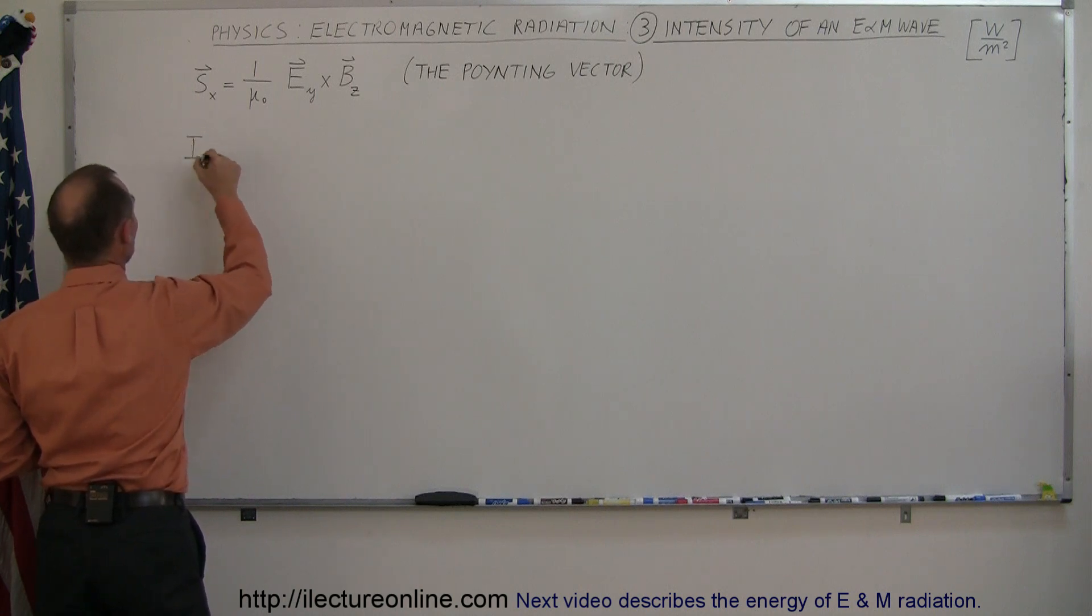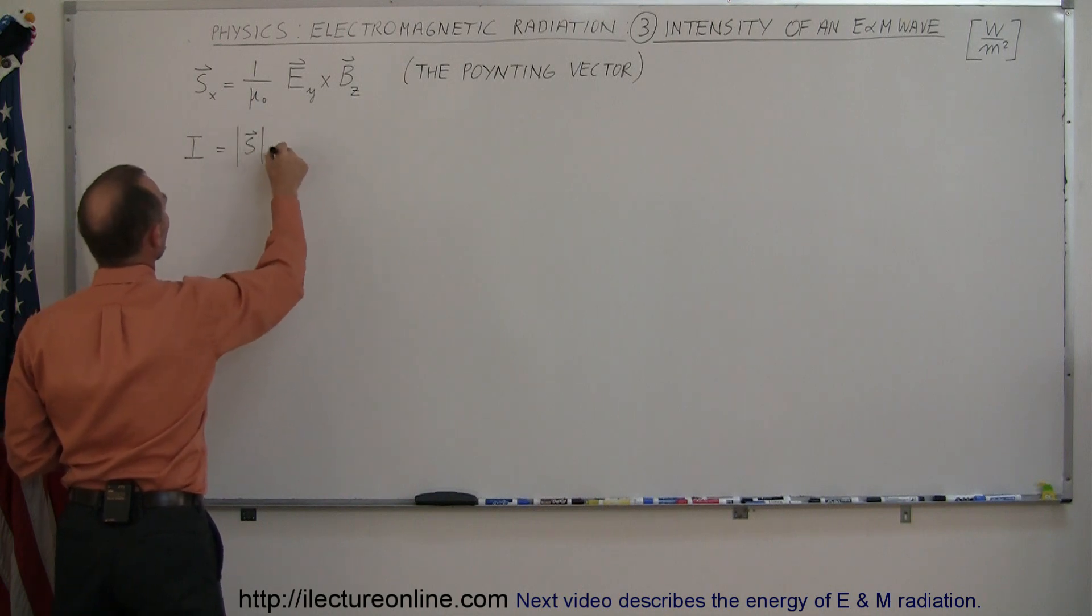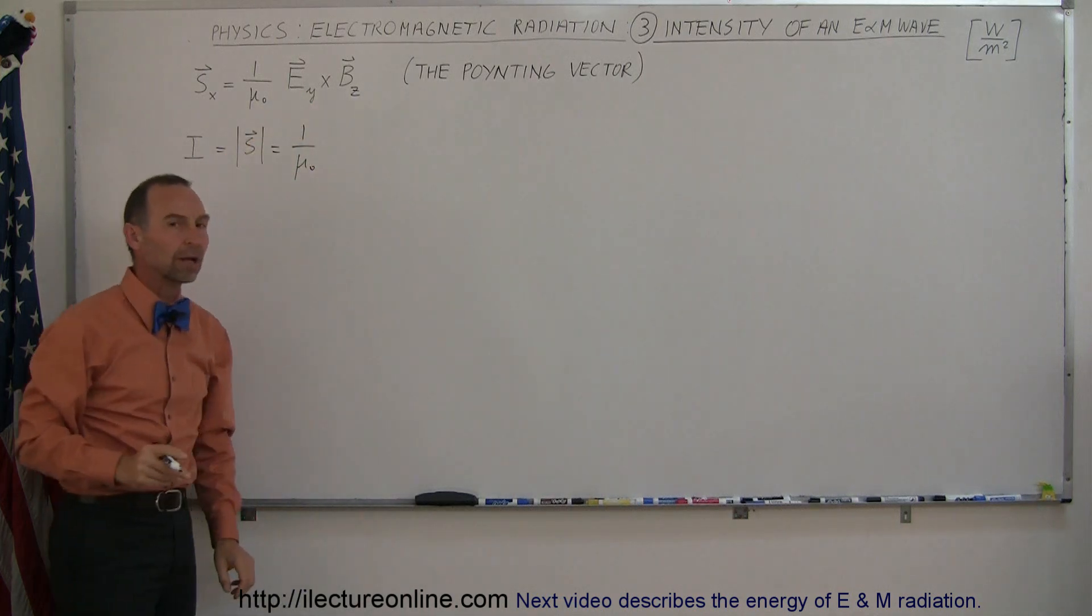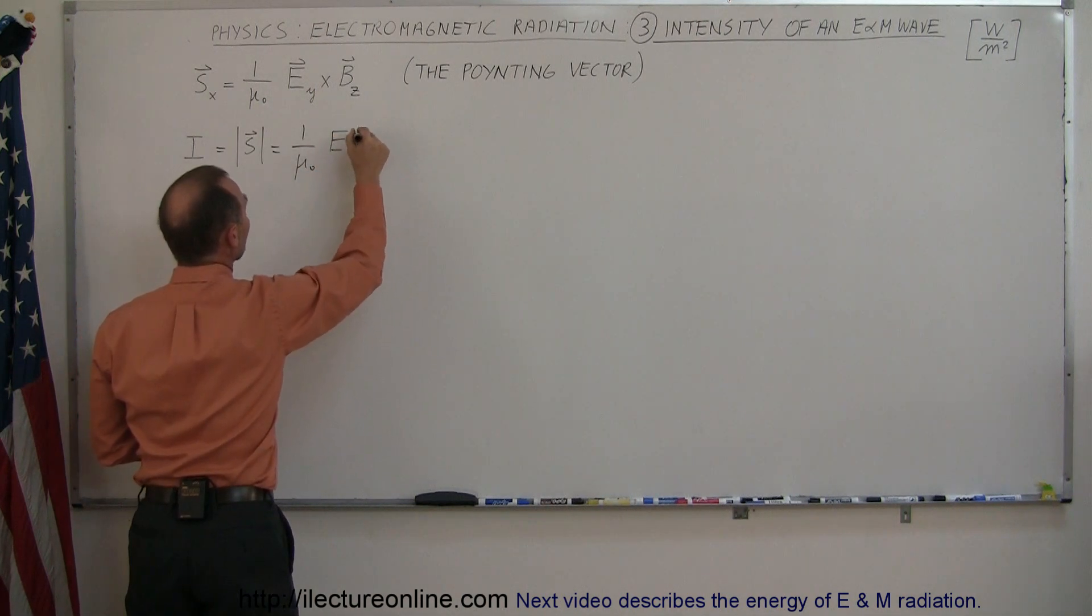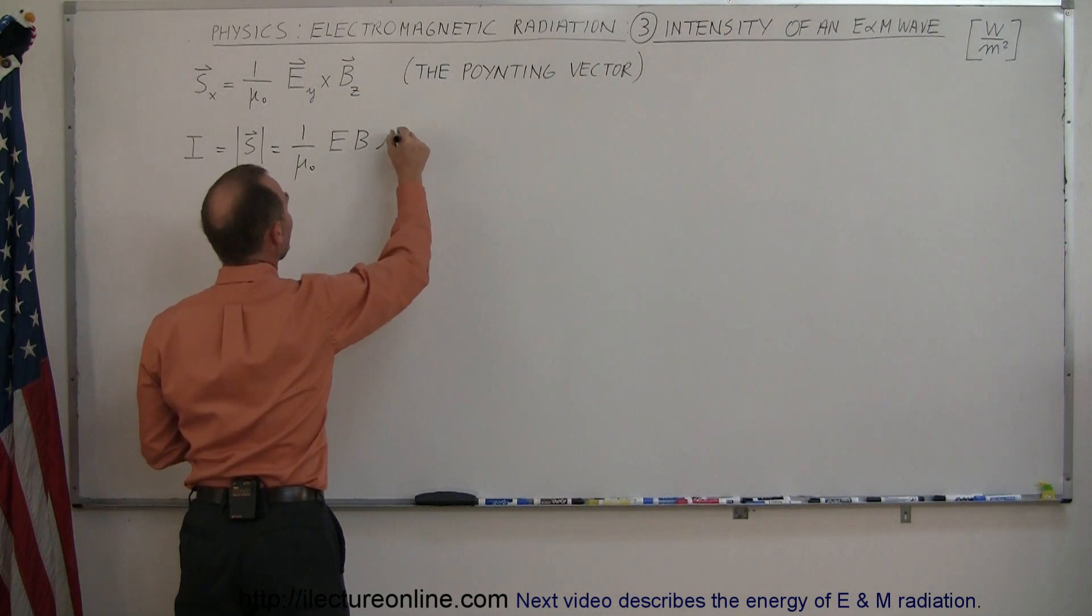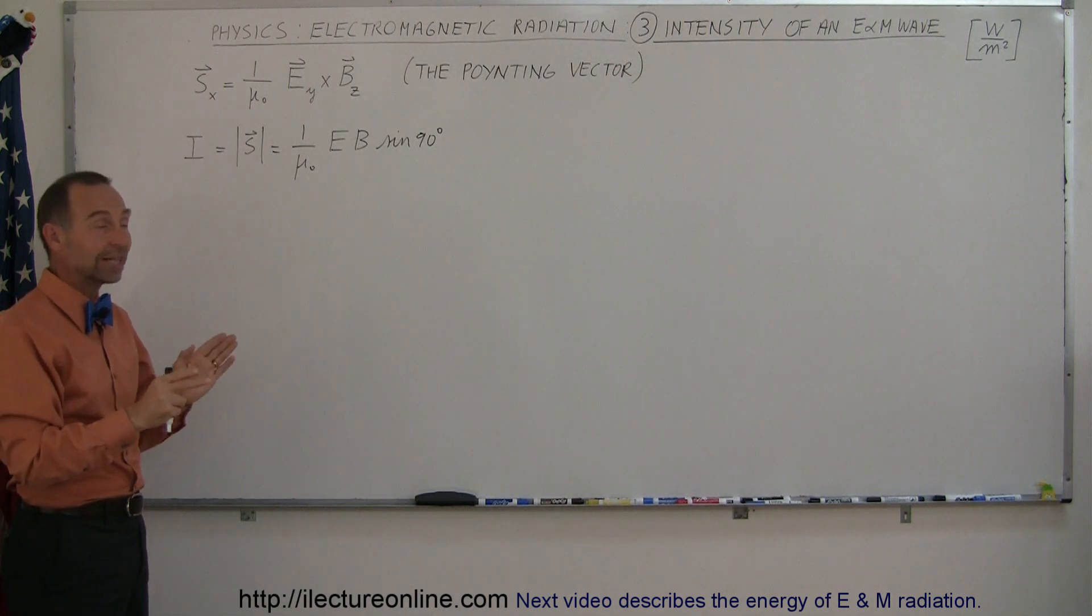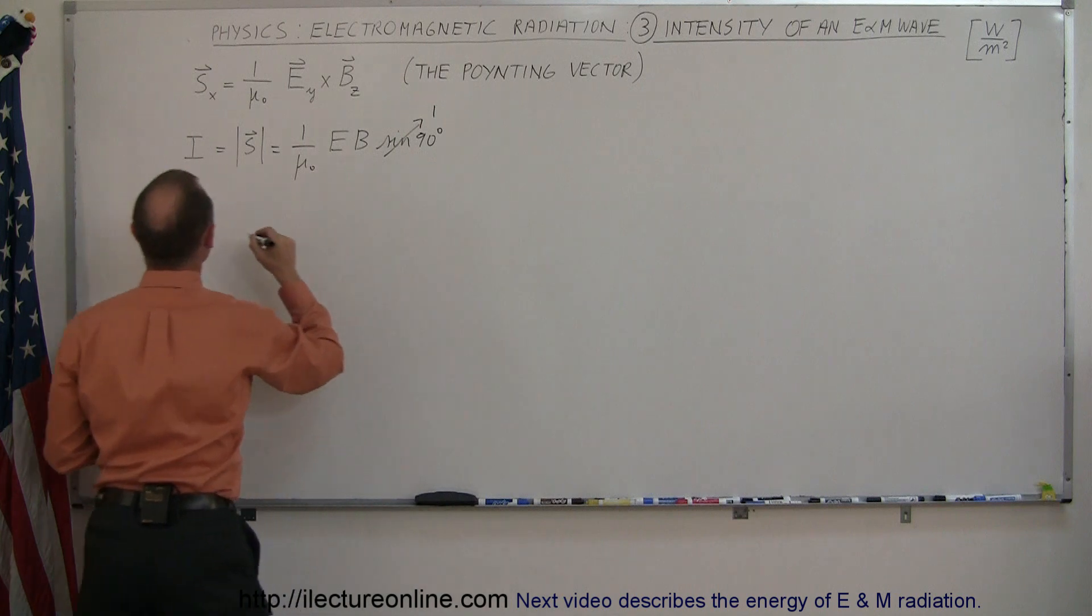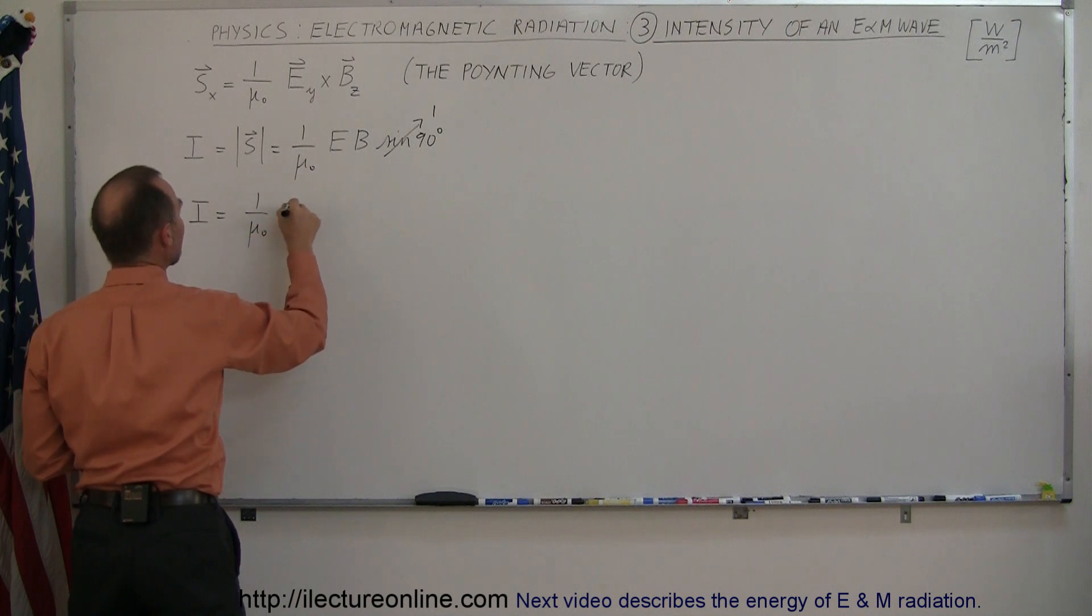It turns out that the magnitude of this Poynting vector is equal to the intensity of an electromagnetic wave. So the intensity of an electromagnetic wave, I, is equal to the magnitude of the Poynting vector, which means it's equal to 1 over μ₀ times the magnitude of the cross product. Remember, the magnitude of the cross product is the magnitude of the electric field times the magnitude of the magnetic field times the sine of the angle between them. So it would be times sine 90 degrees, because the electric field and magnetic field oscillations are oscillating at angles of 90 degrees with respect to each other. And sine of 90 degrees is equal to 1, which means that the intensity of electromagnetic radiation is equal to 1 over μ₀ times E times B.